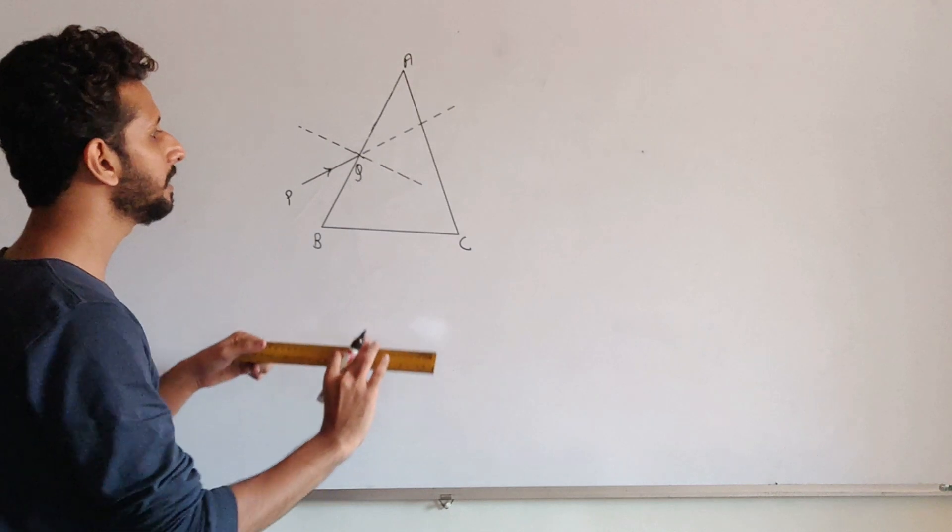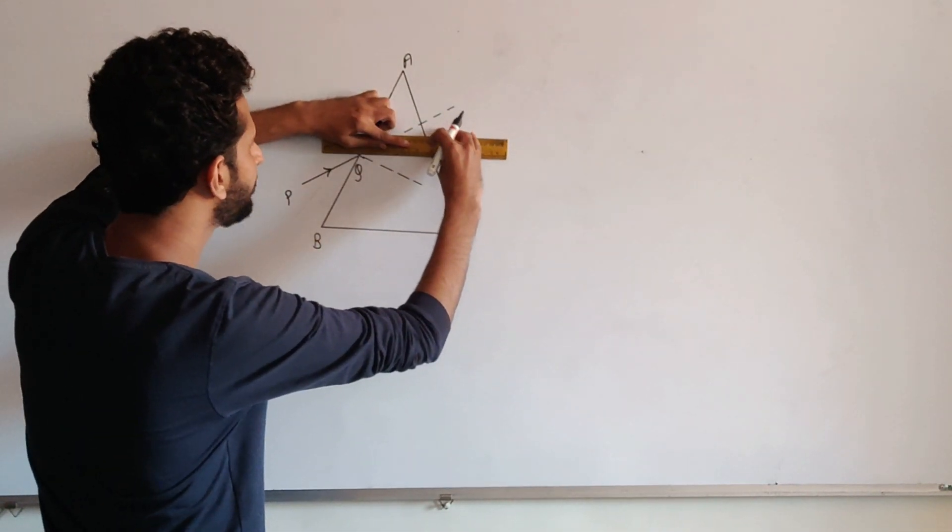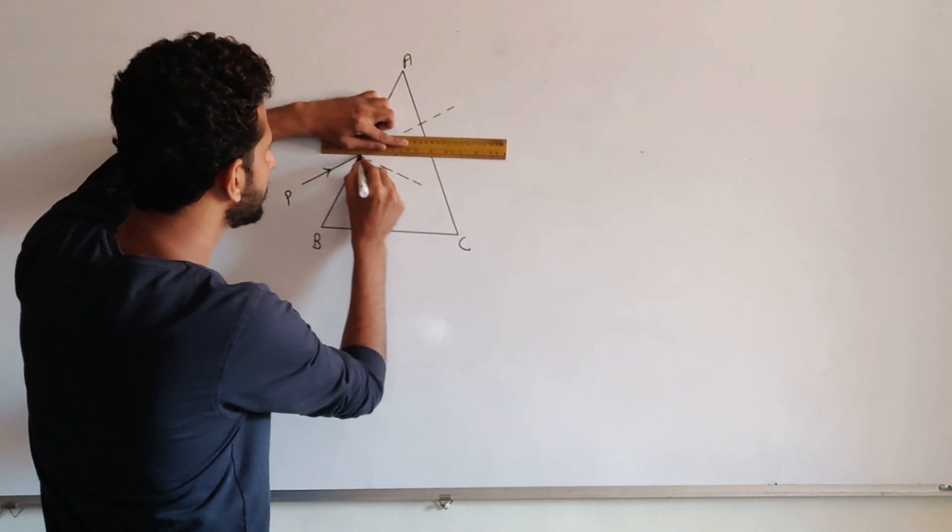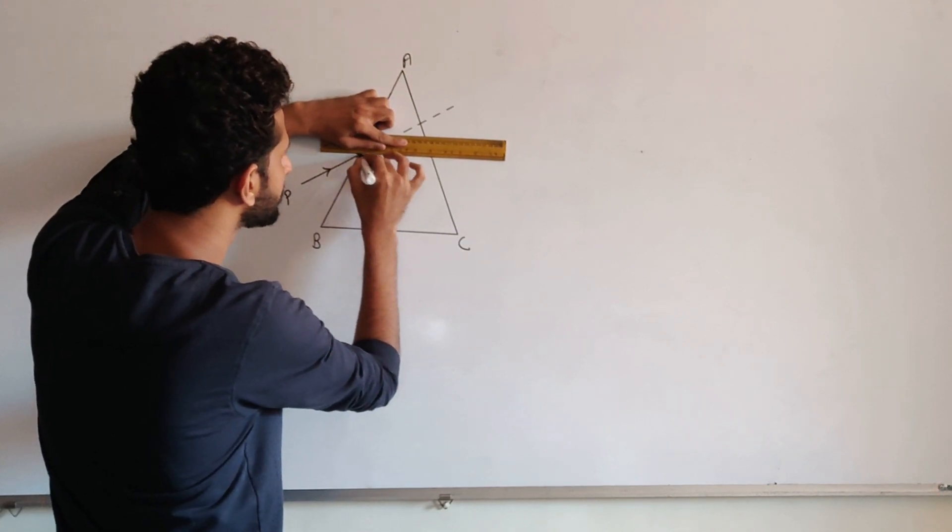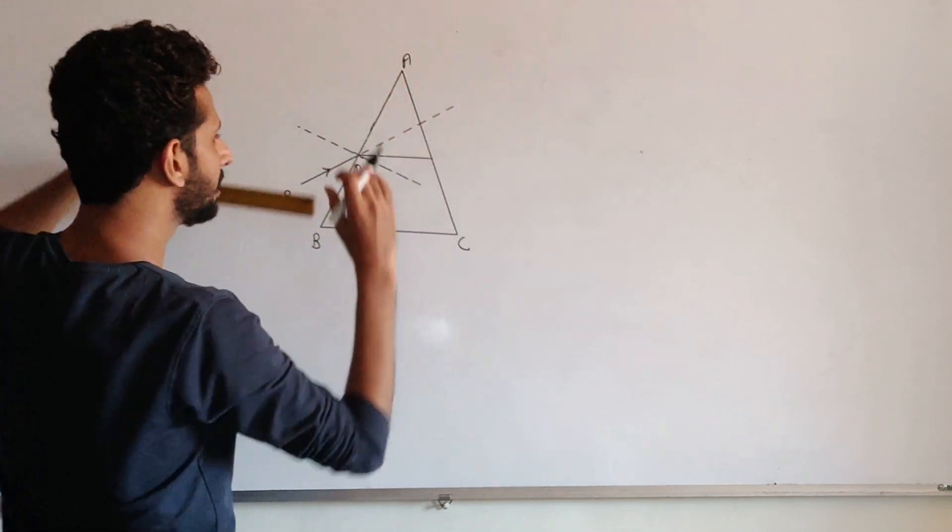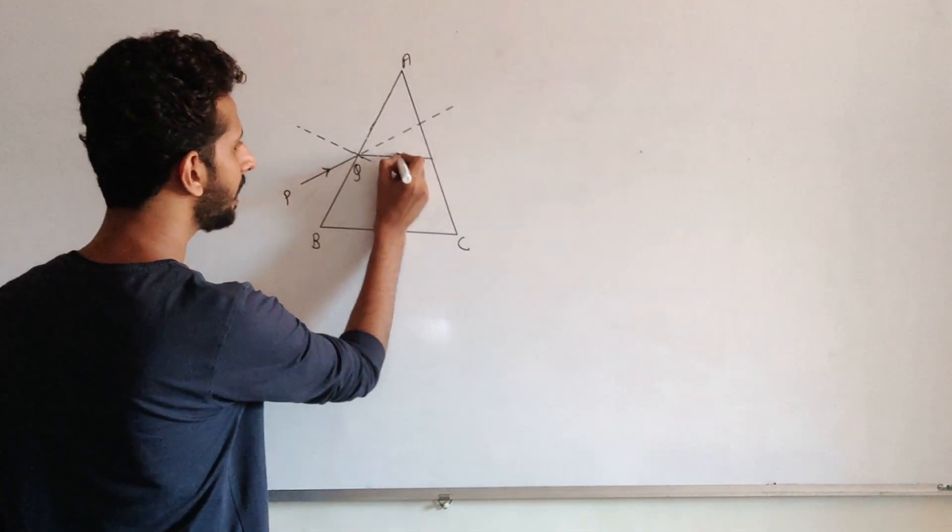Now, once that is done, the next step is to draw the refracted ray. So the refracted ray will be in this direction. So that is your refracted ray. Mark that arrow.